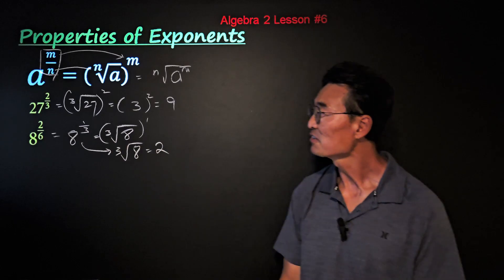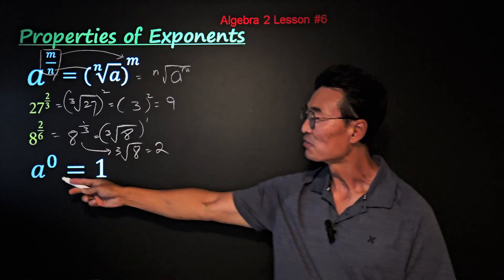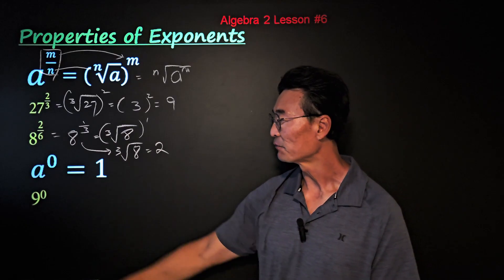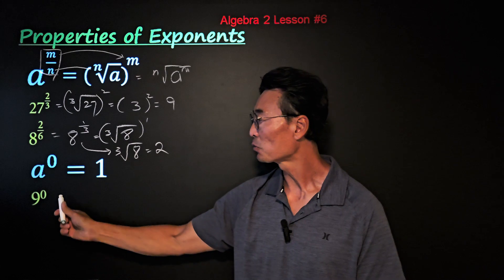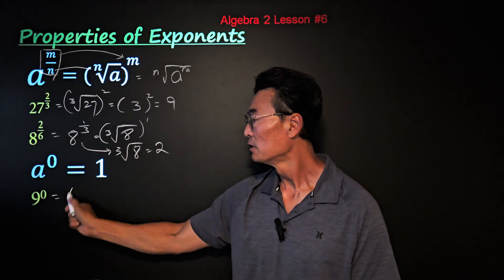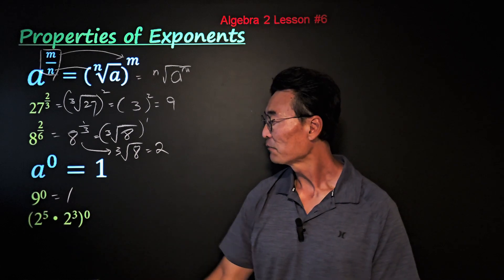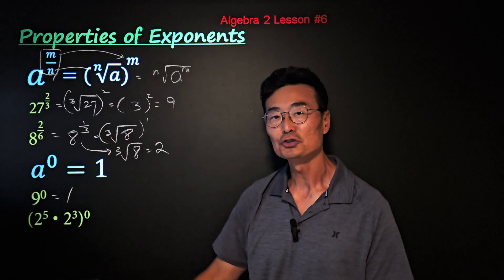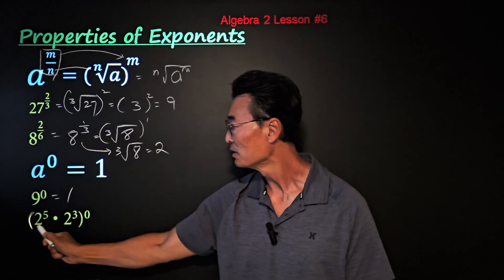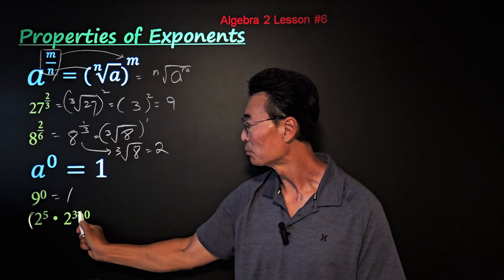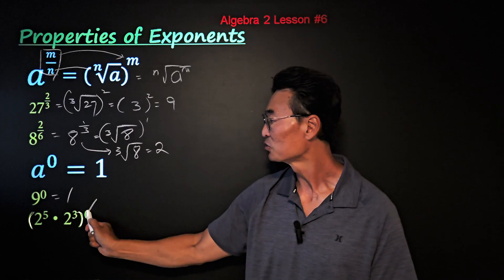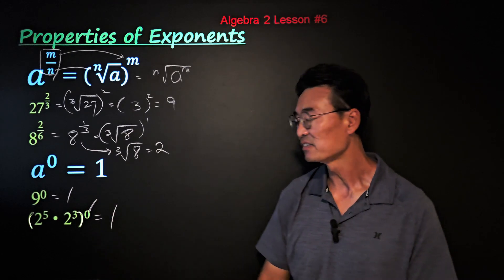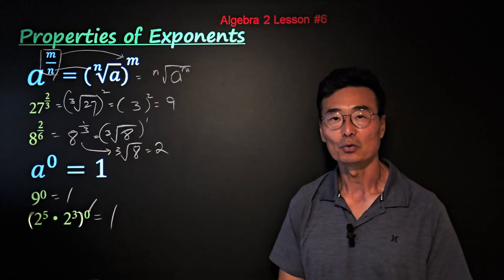Here's our second rule: anything to the 0 power equals 1. For example, 9 to the 0 power equals 1. Even something like 2 to the 5th times 2 cubed, as long as the whole expression inside the parentheses is raised to the 0 power, this entire thing will always equal 1.